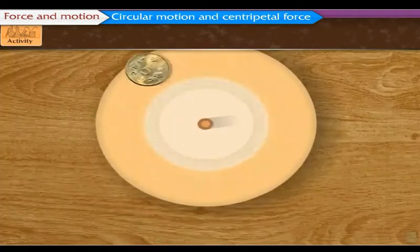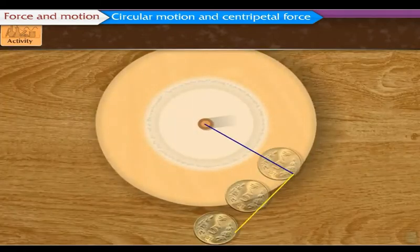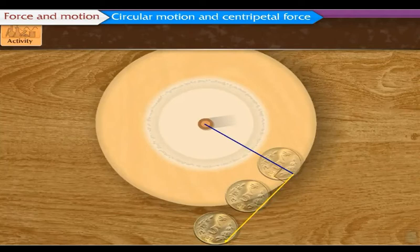When the coin is thrown off from the disc, it is in the direction of the tangent which is perpendicular to the radius of the disc.